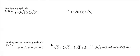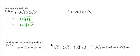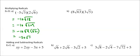Multiplying radicals: outsides with outsides and insides with insides. So in this case, negative 5 times 2 is negative 10, and root 3 times root 6 is root 18. Then we have to see if we can simplify that. Root 18 is root 2 times root 9, and the square root of 9 is 3. So negative 10 times 3 times root 2 gives us negative 30 root 2.